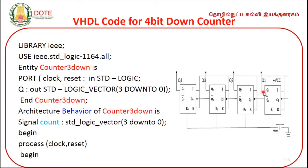Then the outputs Q1, Q2, Q3, Q4 are declared. We combine them as: q: out std_logic_vector(3 downto 0); We close the bracket with a semicolon and end the entity with: end counter3_down;